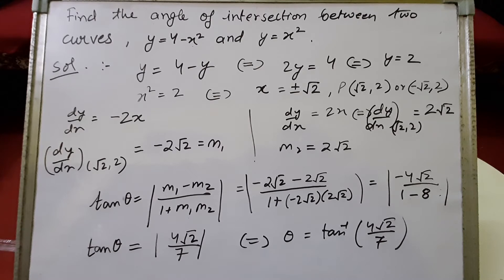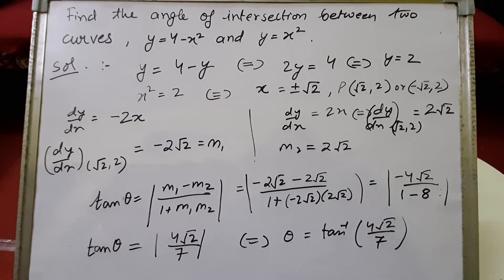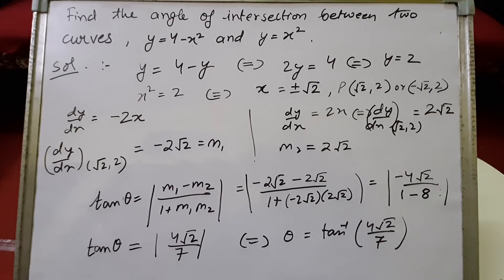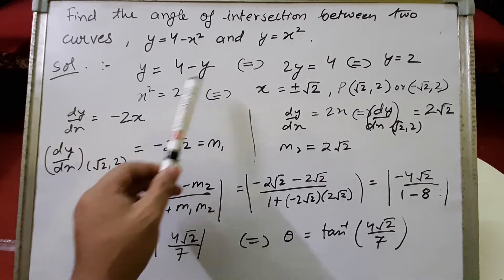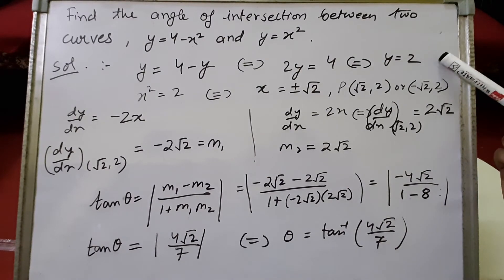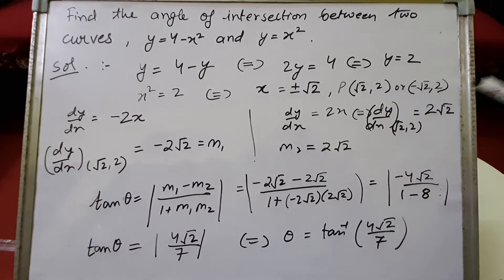Let's see another sum: find the angle of intersection between two curves y equals 4 minus x squared and y equals x squared. We know the angle of intersection formula is tan theta equals mod of (m1 minus m2) upon (1 plus m1 m2). First, let us find the points of intersection. Substituting x squared equals y into the first curve gives y equals 4 minus y, so 2y equals 4 and y equals 2. Then x squared equals 2 gives x equals plus or minus root 2. The intersection points are (root 2, 2) and (minus root 2, 2). We calculate the angle at point (root 2, 2).